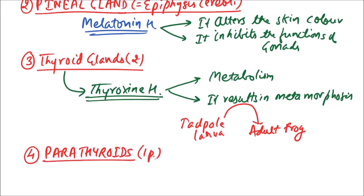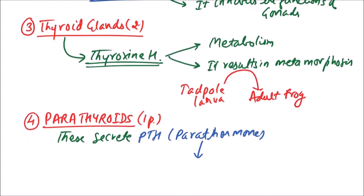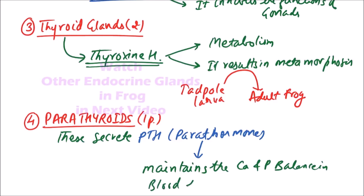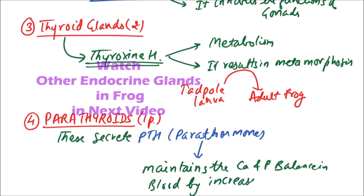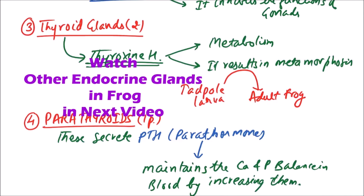Next are the parathyroids, which are two in number — one pair — and they secrete PTH, that is parathyroid hormone. This hormone plays an important function of maintaining the calcium and phosphorous balance in blood by increasing them, resulting in retention of calcium and phosphorous in the blood.